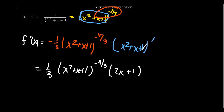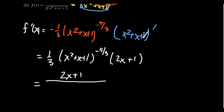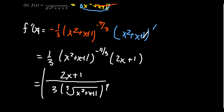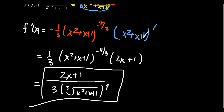Since the original function was written as a fraction with radicals, I'll write the derivative in that same style. We have 2x plus 1 in the numerator. In the denominator we have a factor of 3, and then x squared plus x plus 1 raised to the four-thirds power — or equivalently, the cube root of x squared plus x plus 1 raised to the 4th power in the denominator. I'm trying to make the derivative resemble the original function in style.